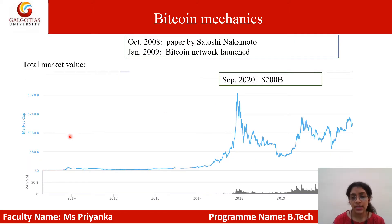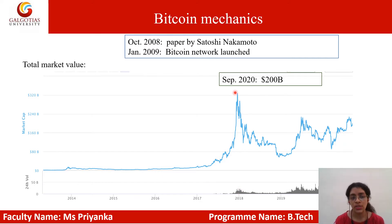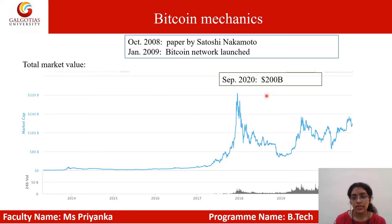If we look at the trend of Bitcoin, initially it was at a very low cost. But in 2018, it reached its maximum cost — more than 320 billion. That was the market cap of Bitcoin. Then it degraded, and currently in September 2020, the cost of one Bitcoin is around $300.